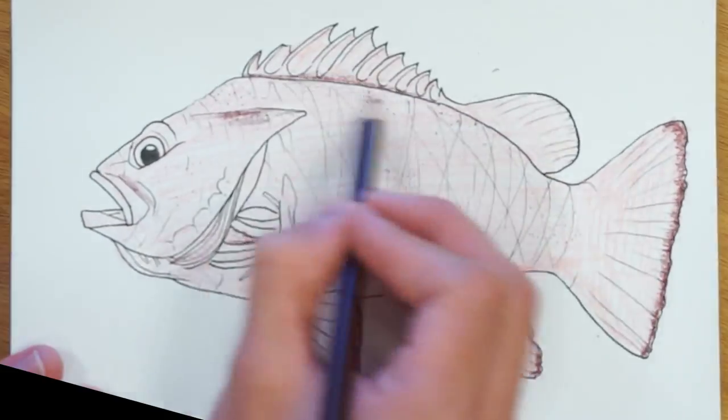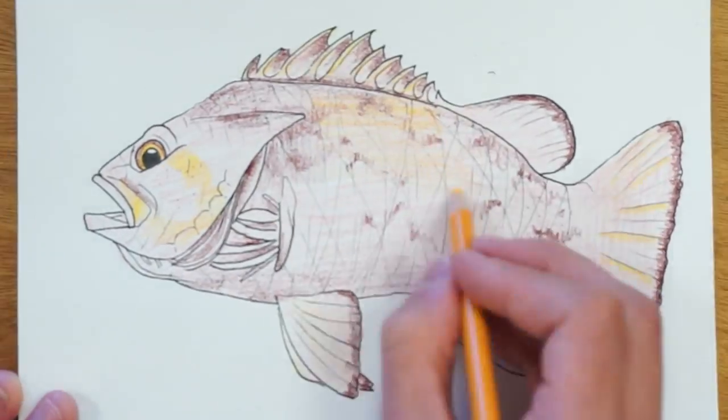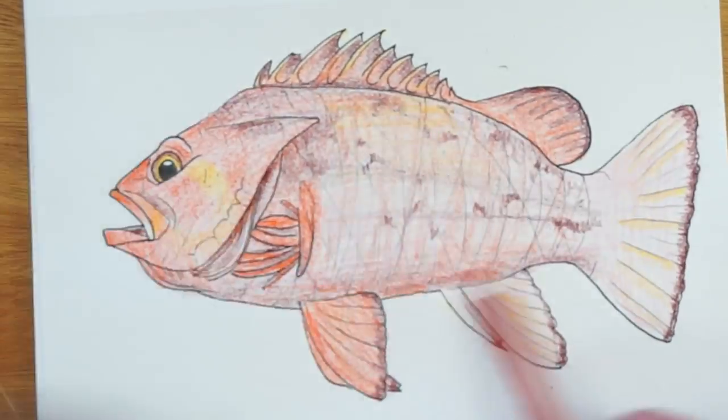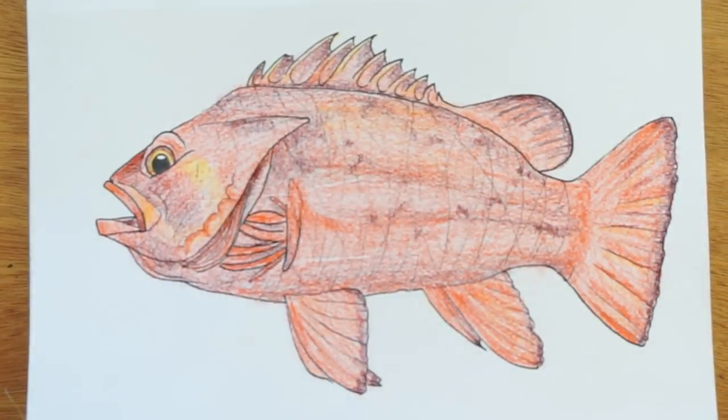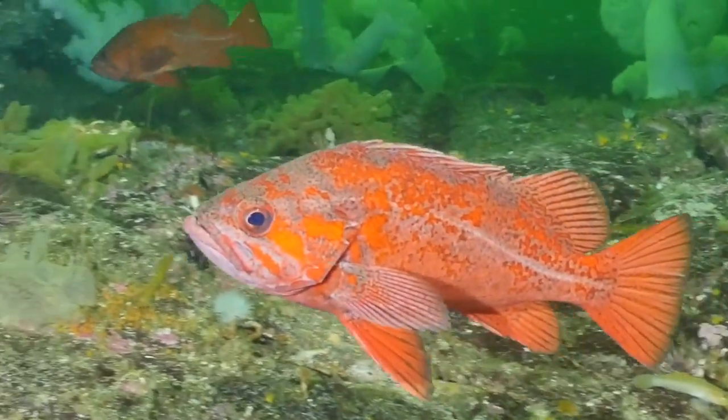Because they live so long, they need to be protected so that they can get old enough to reproduce before they are fished. The old female fish are especially important because they produce exponentially more offspring each year.